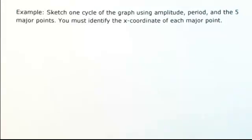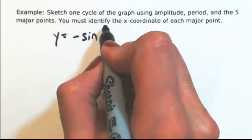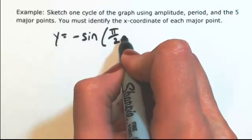Sketch one cycle of the graph using amplitude, period, and the five major points. You must identify the x-coordinate of each major point. So let's say we have y equals negative sine of pi over 2x.